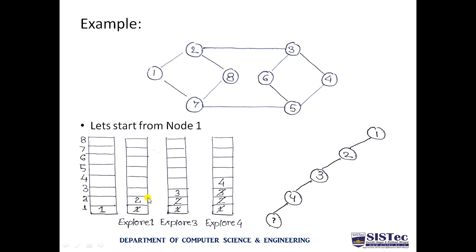Node 2 is now at the top of the stack and gets explored. Exploring node 2 gives two options: 3 or 8. Following order, we visit 3. Node 2 is deleted, node 3 is stored in the stack. Exploring node 3 gives options 4 or 6. We go toward 4. Node 3 is deleted, node 4 is stored. The spanning tree so far: 1, then 2, then 3, then 4.